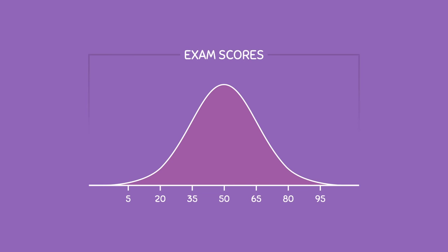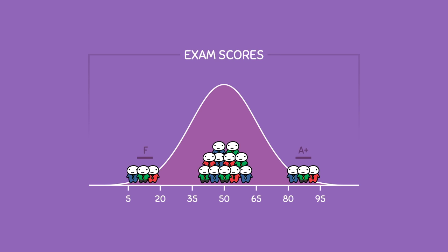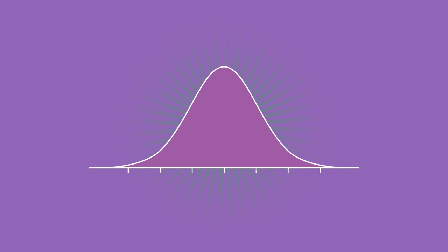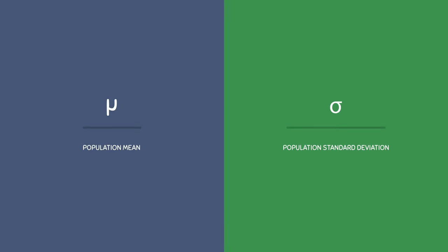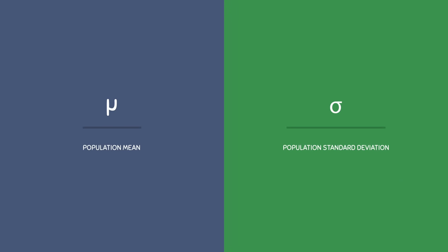For example, exam scores are known to follow a normal distribution. Some people do great on exams, some people do poorly, but a large majority of people score near the average or the mean. In this example, the average exam score is 50 because it is located in the middle of the curve. Now that you know what a normal distribution looks like, we need to talk about the population mean mu and the population standard deviation sigma.